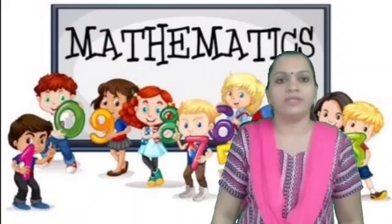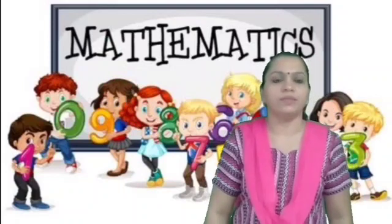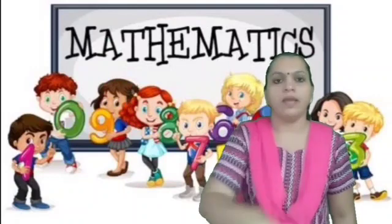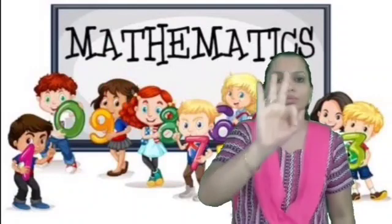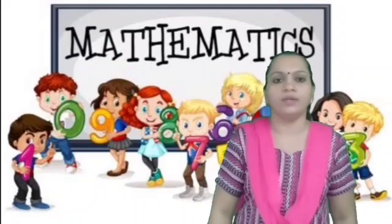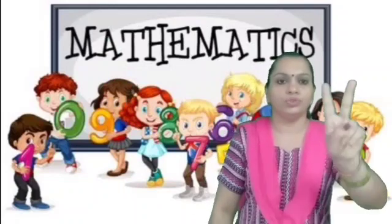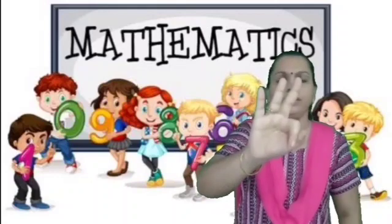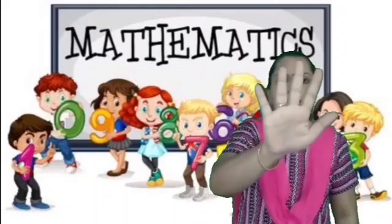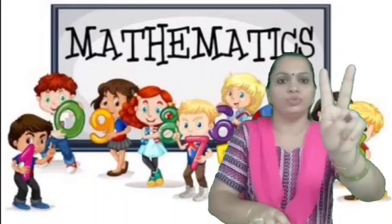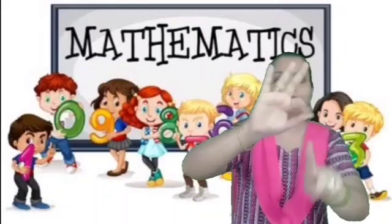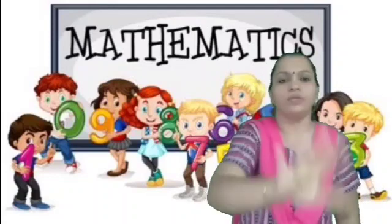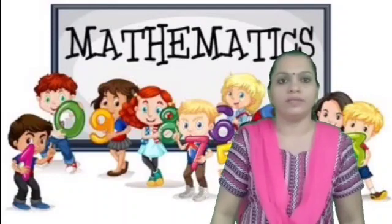Children, now we will start with problem sums. Mummy gave you 2 chocolates and daddy gave you 3 chocolates. So, how many chocolates are there in all children? 2 plus 3 is 5. So, there are 5 chocolates in all.